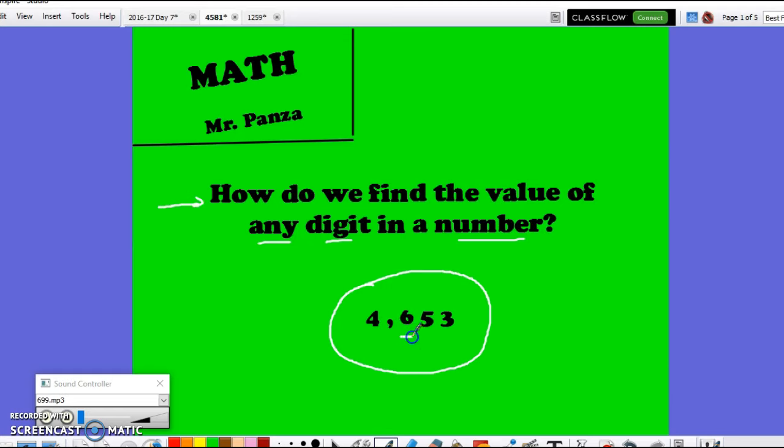For example, if we were looking for the value of the number 6 or the digit 6 within the number 4653, you can follow these four steps and get the answer every single time. Let me show you how.